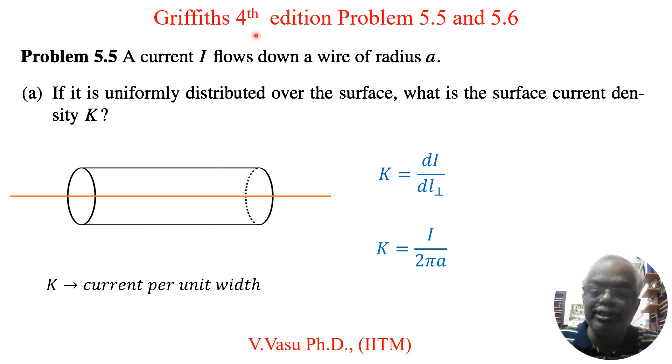This is from Griffith 4th edition, Introduction to Electrodynamics. Problem 5.5 consists of two parts. A current I flows down a wire of radius A.